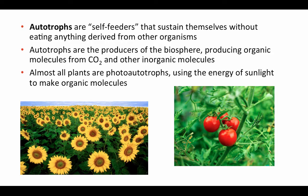Almost all plants are what we call photo-autotrophs — they use the energy of sunlight to make organic molecules. I've mentioned chemo-autotrophs that gain their energy from redox reactions involving inorganic molecules, but when we're talking about photosynthesis and plants and other photosynthetic organisms, we are looking at photo-autotrophs that make their food using energy that comes from sunlight.